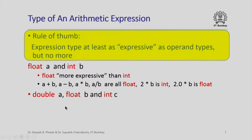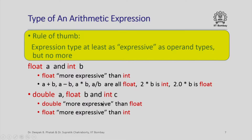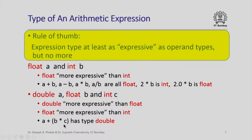Here is another example: if a is double, b is float, and c is int, then double is more expressive than float, and float is more expressive than int. So for an expression involving all of a, b, and c, the type of the expression is going to be double — at least as expressive as the types of each of the operands and no more.